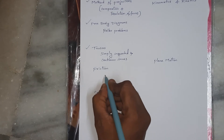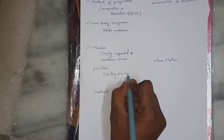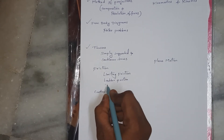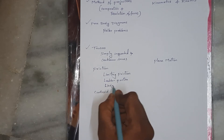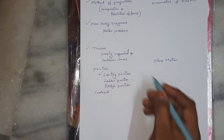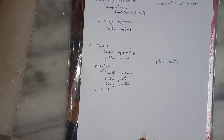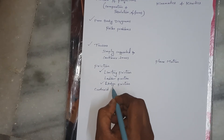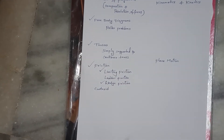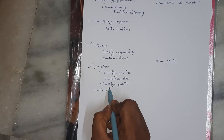Friction is a very important topic. The three types are: Limiting Friction, Ladder Friction, and Wedge Friction. In Limiting Friction problems, blocks connected on inclined planes with free body diagrams are common. In Wedge Friction, heavy weights are lifted using wedges. From observing previous exam papers, these two types appear most frequently. Give equal concentration to both friction types.